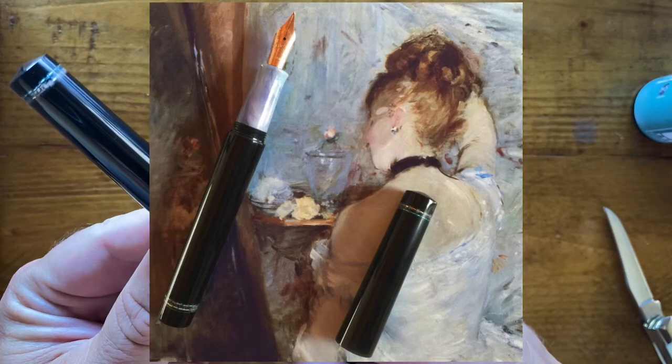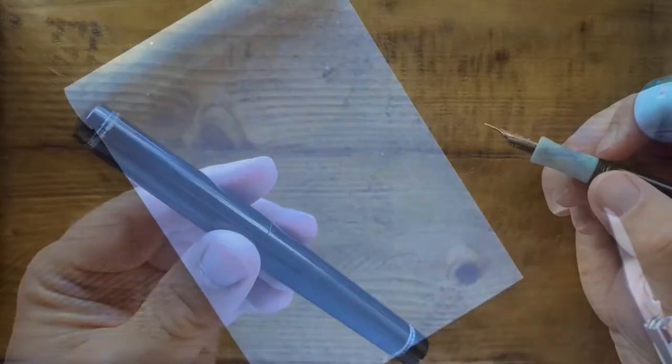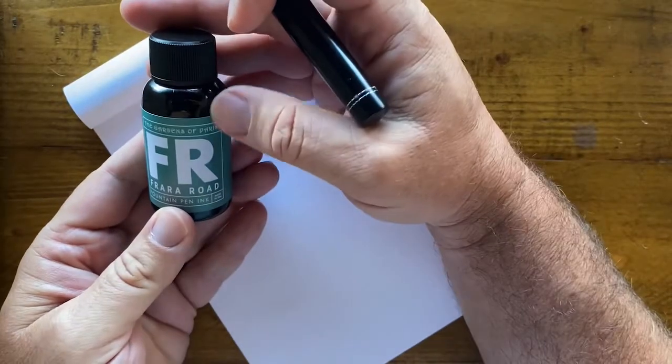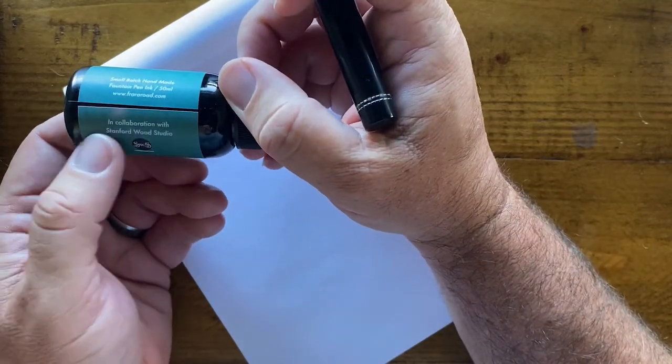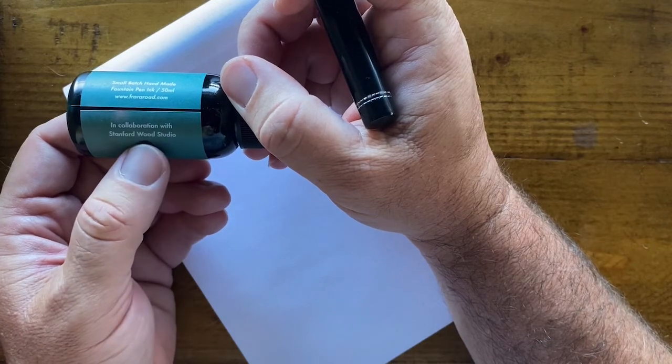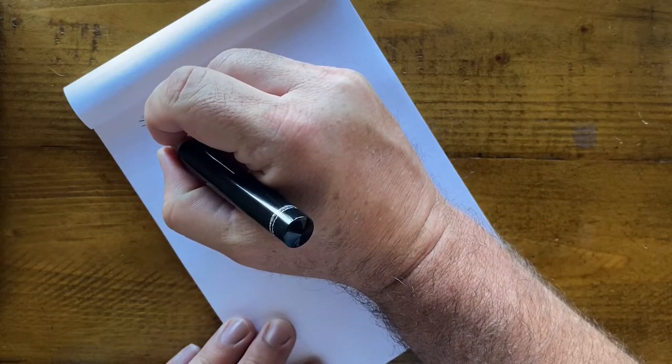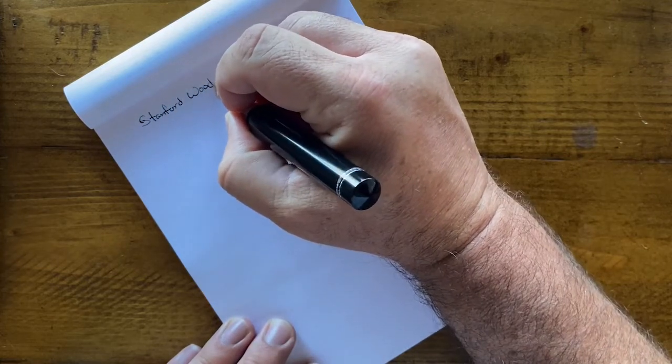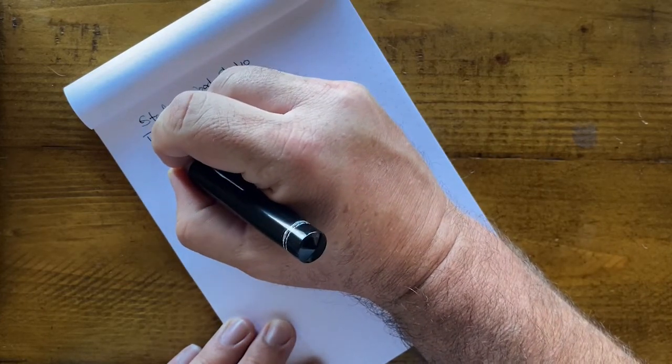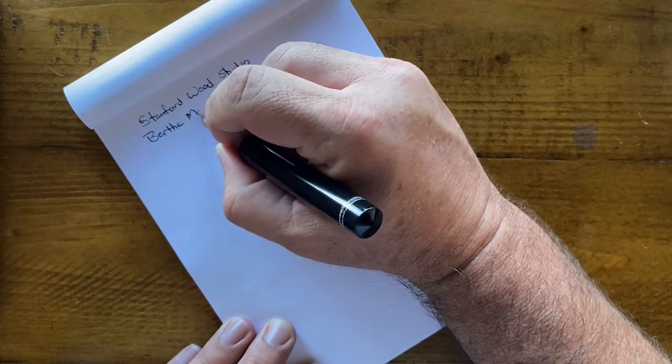I'll ink this up and we'll be right back. Alright, so she's all inked up. We did use the ink that came with it. You can see on the back here, handmade small batch in collaboration with Stanford Wood Studio. This is Stanford Wood Studio. Now the name of this pen is fairly long. I know this is the name of the artist which I haven't pronounced because I'm pretty sure I will mispronounce it.